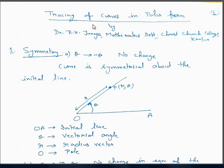Today we are going to discuss tracing of curves in polar form. We take a line OA which is a fixed line, known as the initial line. A line making angle theta with this line is called the radius vector. If P is the point with coordinates (R, theta), then R is the distance of point P from O, and theta is measured in the counterclockwise direction, known as the positive sense. OA is the initial line, theta is known as the vectorial angle, R is known as the radius vector, and point O is known as the pole.